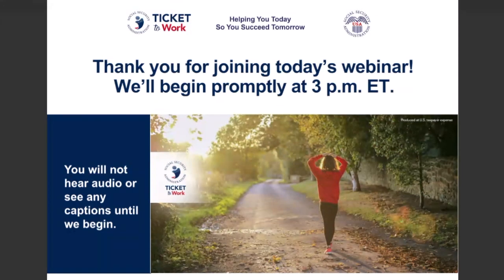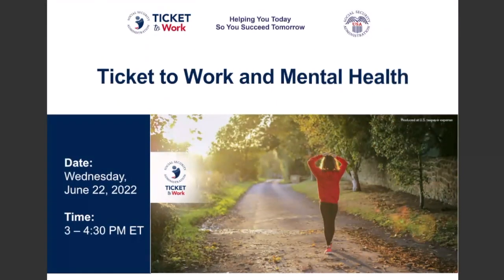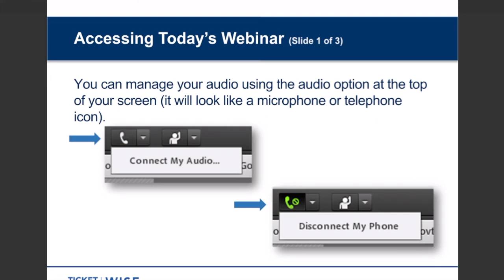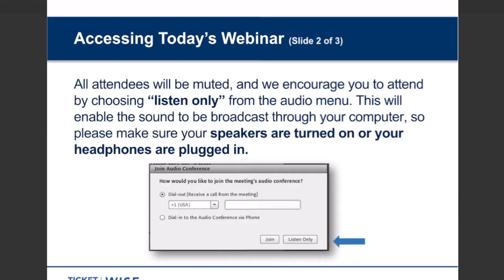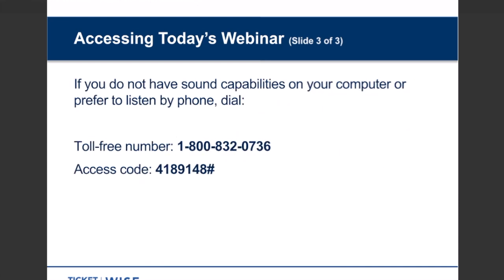Let's get started by reviewing some functions of the webinar platform so you can interact and get the most out of today's session. You can manage your audio using the audio option at the top of your screen — an icon that looks like a microphone or telephone. All attendees will be muted throughout today's webinar. When presented with options for joining the audio conference, choose Listen Only in the bottom right, which allows sound to be broadcast through your computer speakers or headphones. If you do not have sound capabilities or prefer to listen by phone, please dial 1-800-832-0736 and enter access code 418-9148 pound sign.